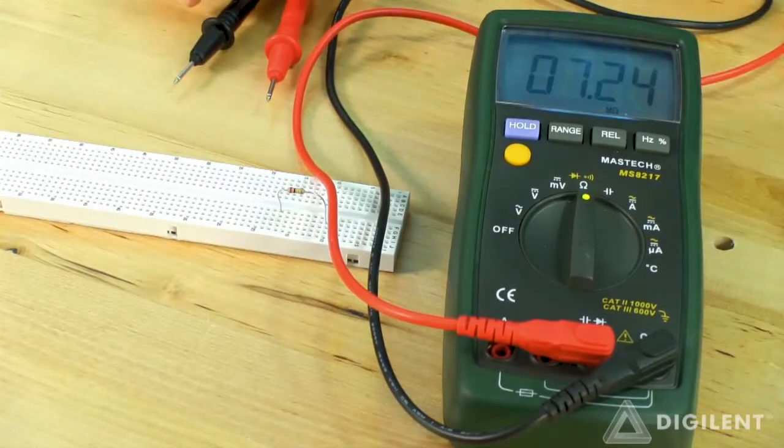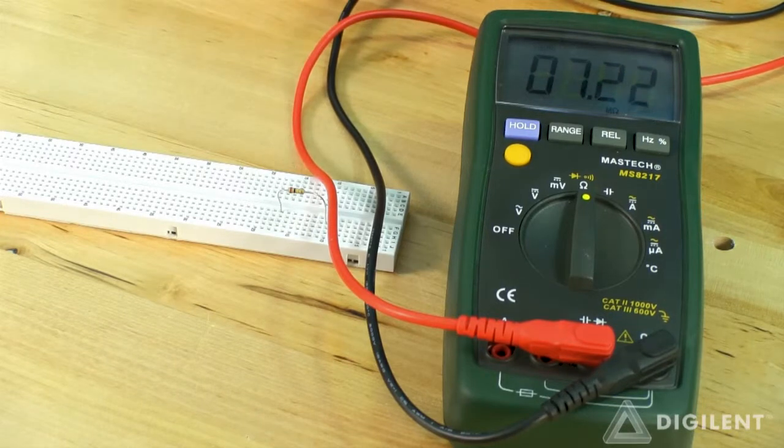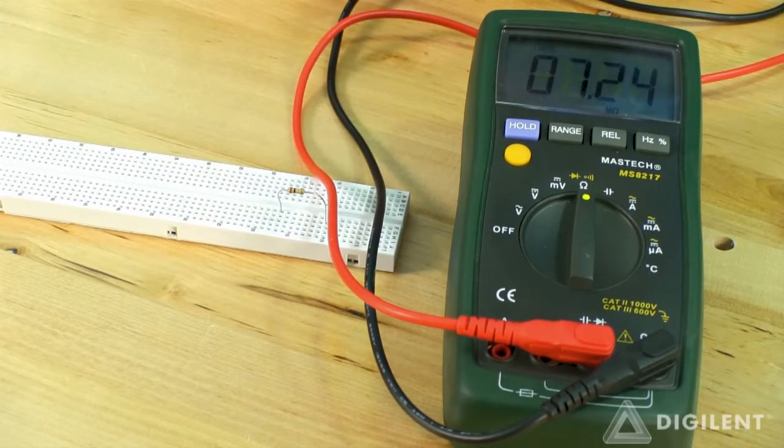The leads of the DMM are then placed across the terminals of the device whose resistance we want to measure. There's no polarity or sign associated with resistance, so it doesn't matter which terminal each lead is applied to.